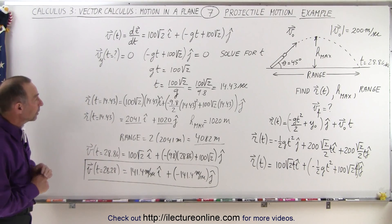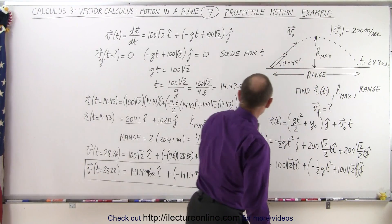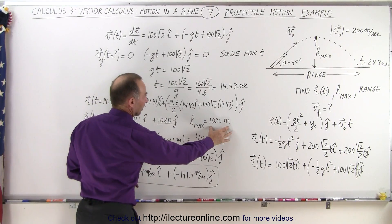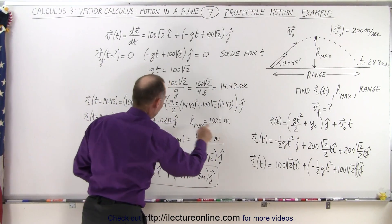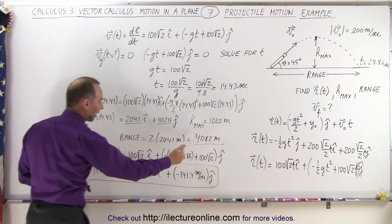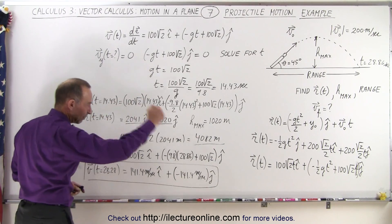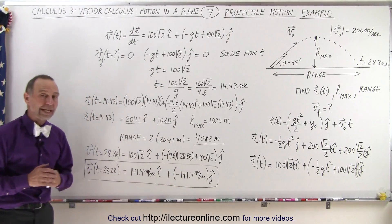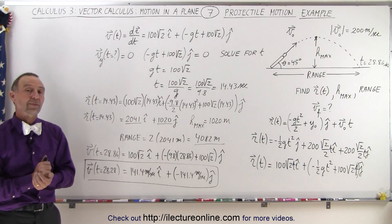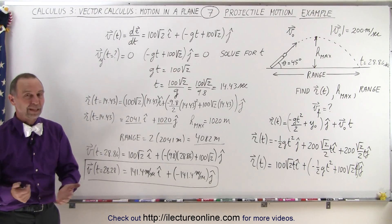So to summarize: we found the time to reach maximum height, used it to get the maximum height of 1020 meters, doubled the horizontal distance to get the full range, and plugged the full time of 28.86 seconds into the velocity equation to get the final velocity in both x and y directions. That's a complete example of projectile motion in two dimensions using vector notation.